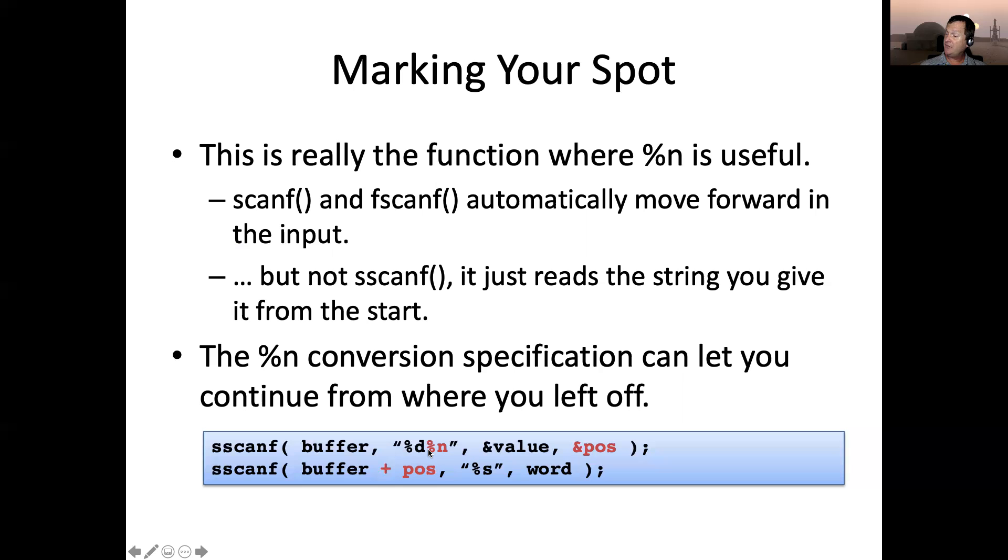So this, like I said, if you read an integer and you had to parse three characters to read it, this would store the three here. And then buffer plus that position, that would give you the address of the element of the array where you left off. And calling something like this would let you continue parsing from there.